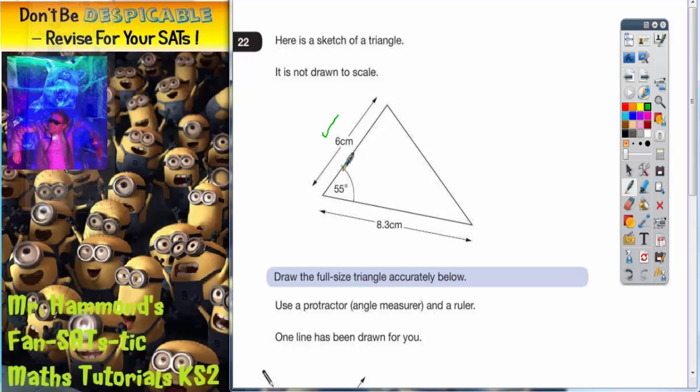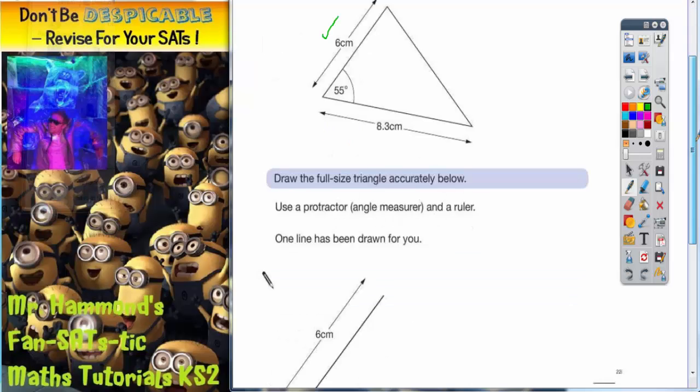So what we've got to do first of all is measure the 55 degrees. We can't draw the 8.3cm because we don't know exactly the angle yet. And if you draw the 8.3 in first, you could be doing it at an incorrect angle. So we've got to measure the angle of 55 degrees first.